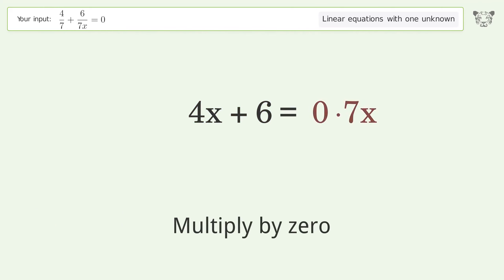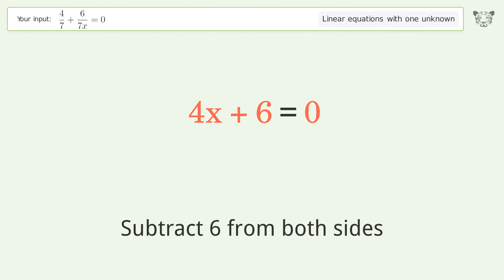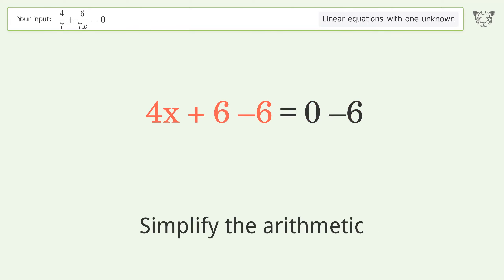Multiply by 0. Group all constants on the right side of the equation. Subtract 6 from both sides. Simplify the arithmetic.